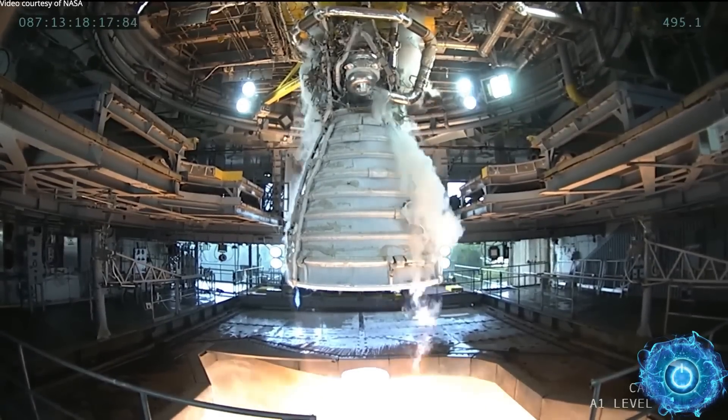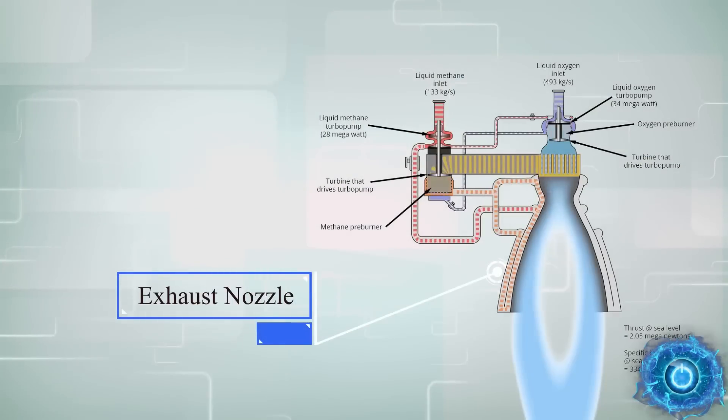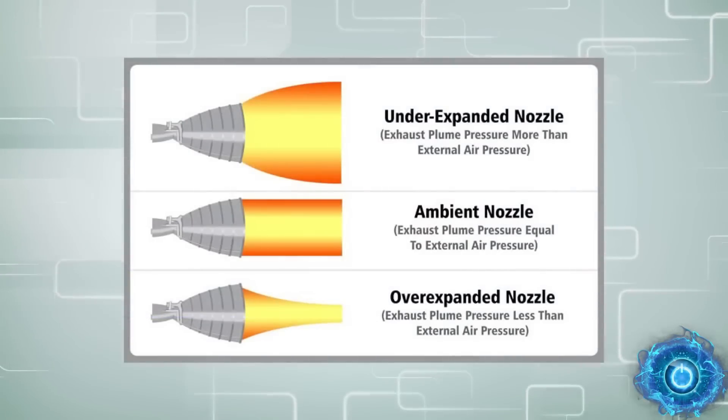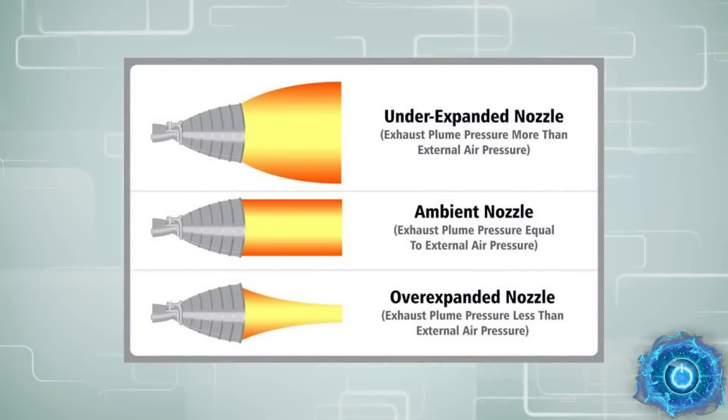Many rockets today utilize a bell-shaped nozzle, and they have peak efficiency at a specific altitude. So there are different bell shapes for different stages of the launch.